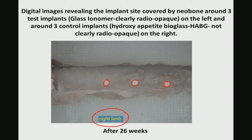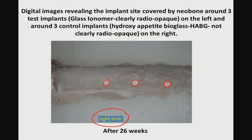An important point to emphasize: as far as possible, all control implants and test implants are to be implanted in the same animal. You cannot do 3 implants in one animal and 3 other implants in a different animal of the same species, because the moment you change the animal, their health status, age, and sex may be different. To avoid any extraneous influence unrelated to the material itself, it is important to put the test implant and control implant in the same animal.